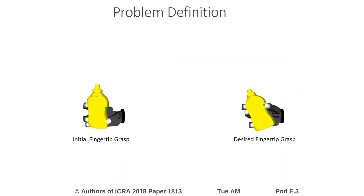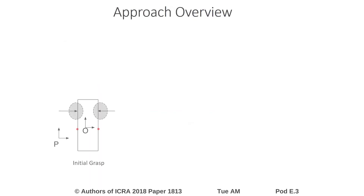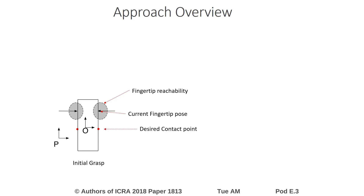Given an initial fingertip grasp on an object and a desired fingertip grasp, we define the problem as finding a sequence of hand joint configurations and object poses that moves the object to the desired grasp. We illustrate our approach with the two-dimensional object seen here. The black arrows indicate the current fingertip poses, and the ellipses around them indicate their reachability. The red points on the object are the desired contact points.